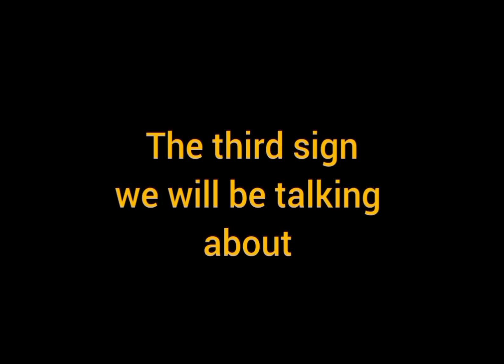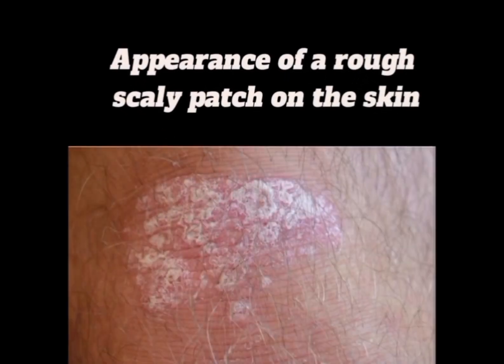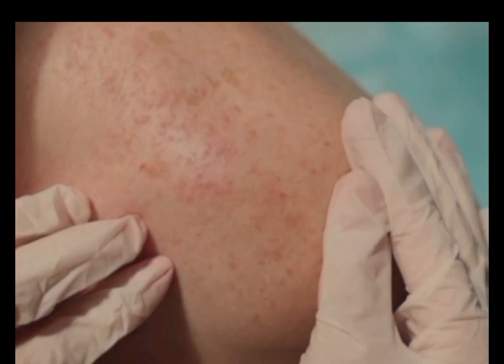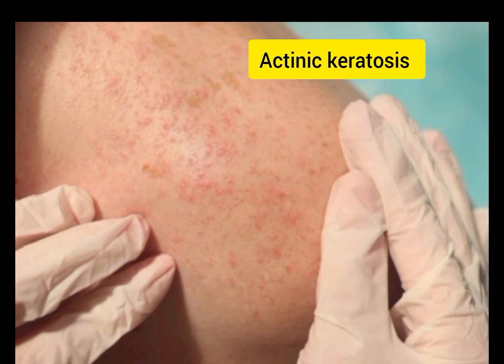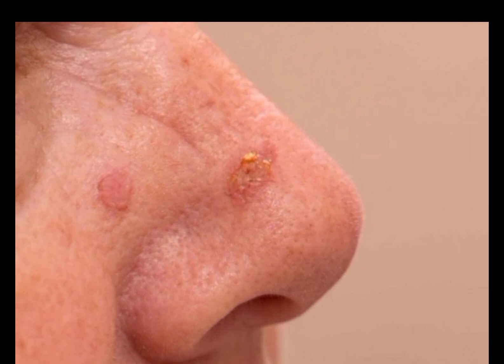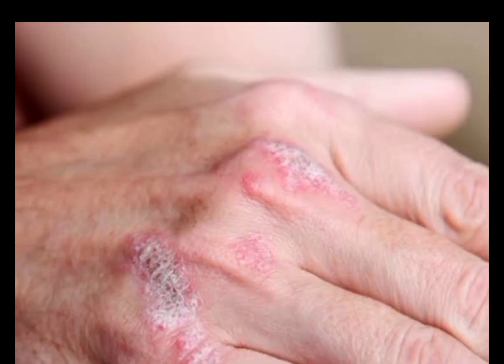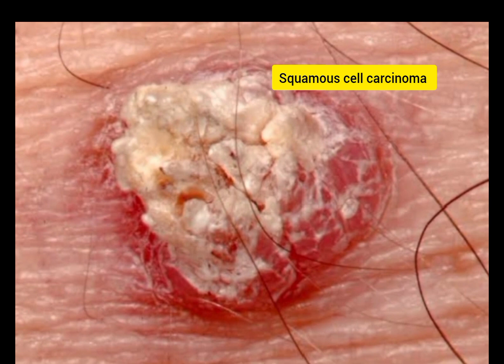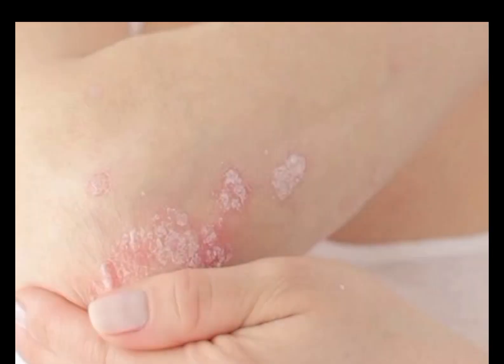The third sign is the appearance of a rough or scaly patch on the skin. Excessive exposure of the skin to the sun can cause a precancerous skin condition known as actinic keratosis, which causes rough scaly patches to appear on the skin. When actinic keratosis is left untreated, it can affect the squamous cell of the skin, leading to a skin cancer called squamous cell carcinoma. Squamous cell carcinoma appears as a thick, rough scaly patch that may crust or bleed. If you notice such patches, contact your health provider immediately for diagnosis and treatment to prevent further complications.